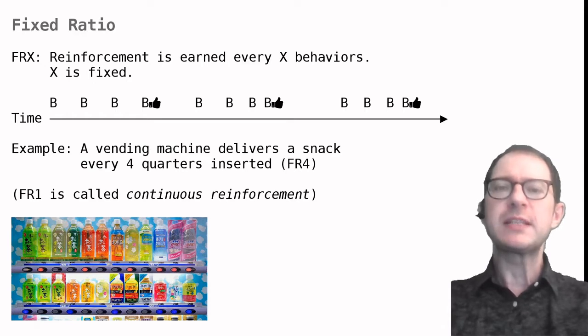A vending machine is a good example of fixed ratio schedule. If you need to insert four quarters to get a snack, the coin insertion behavior is rewarded on an FR4 schedule.